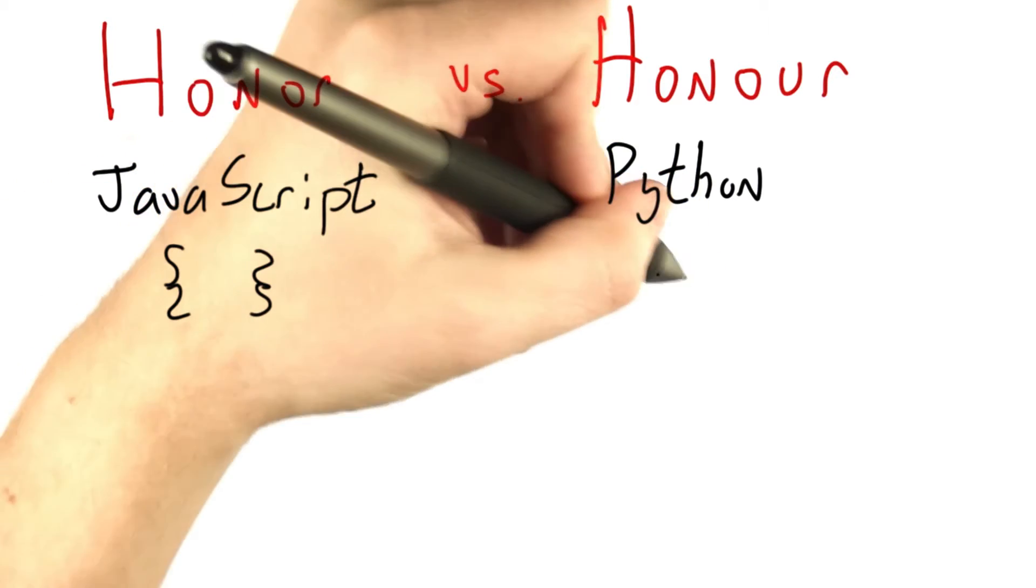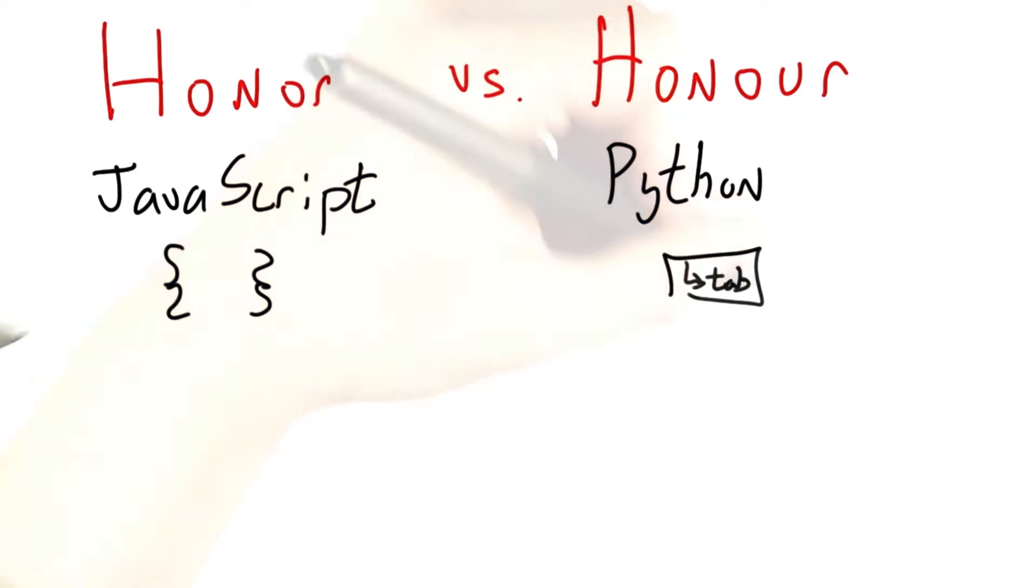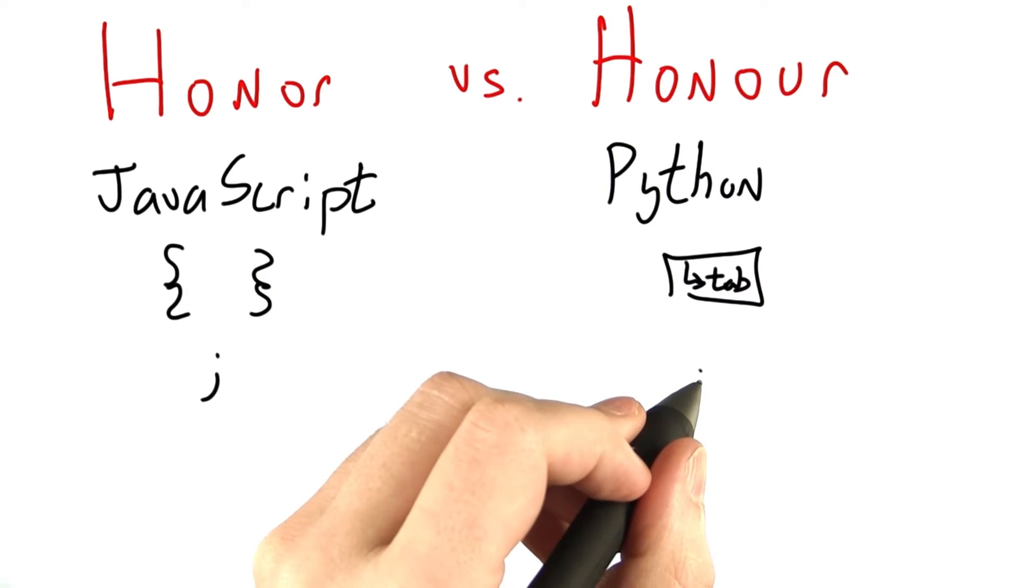JavaScript is big on curly braces. Python is big on tabbing. JavaScript is big on semicolons. Python, not so much.